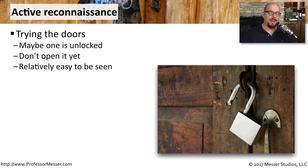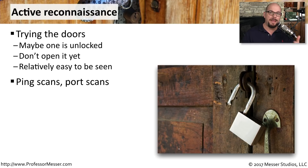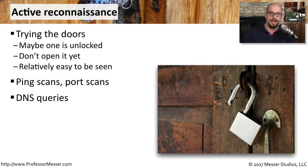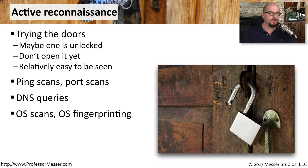After you've passively gathered information, you can now go actively try those systems — usually done with a vulnerability scan. This is the step before you start taking advantage of vulnerabilities. It might be something easy, like someone leaving a guest account enabled or not changing default passwords. You can perform ping scans and port scans, look at DNS queries, and see what results you get back from a publicly available DNS. If you want more information about an individual system, you can perform an operating system scan — what we call OS fingerprinting — to find out what OS may be running without having to authenticate into that system.